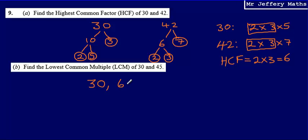So 30, 60, 90, 120. I'm then going to do exactly the same thing for 45. So 45, 90, 135.